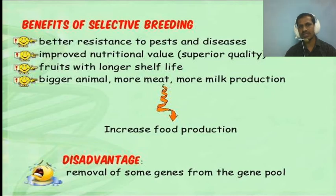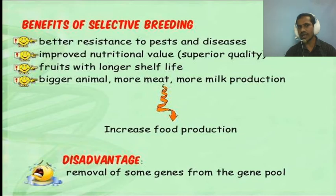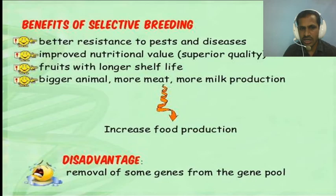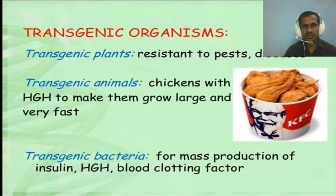The benefits of selective breeding include producing crops better resistant to pests and disease, improving nutritional value, and producing foods with longer shelf life — for example, tomatoes that don't spoil quickly. It also enables bigger animals producing more meat and milk, and increases overall food production. A disadvantage is the removal of some genes from the gene pool.